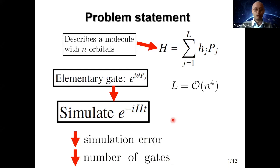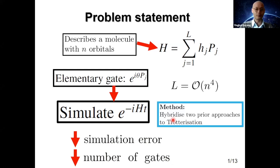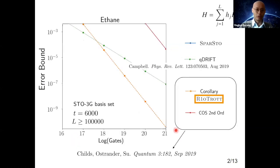The idea of this work is to hybridize two previous approaches to trotterization so that we can inherit the goodness of both schemes and see if we can outperform the previous schemes. The two schemes I'm comparing with are the orange line by Childs, Ostrander and Su, and the green line by Earl Campbell. Can we get a better upper bound on the simulation error than these two lines?